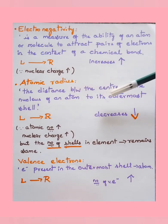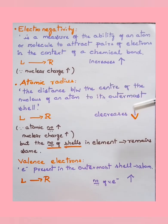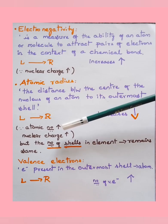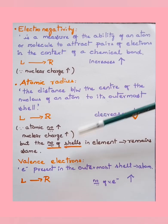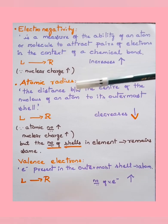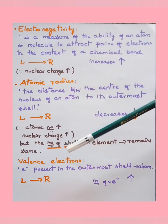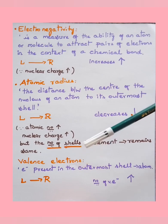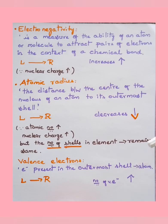Atomic radius is the distance from the center of the nucleus of an atom to its outermost shell. As we move from left to right of a period, atomic radius decreases. This is because atomic number and nuclear charge both increase, but the number of shells remains the same, so the electrons are pulled closer. Valence electrons are the electrons in the outermost shell; their number increases as we move from left to right in a period.